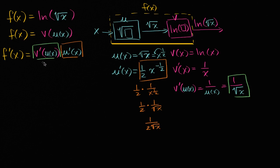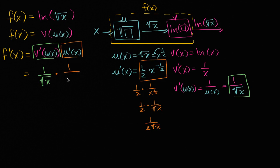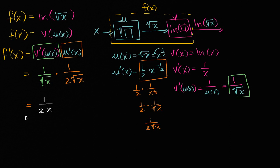So what is f'(x) going to be equal to? It's going to be v'(u(x)) · u'(x) = (1/√x) · (1/(2√x)). This is just algebra at this point: we have a 2 in the denominator, and √x · √x = x. So it simplifies to 1/(2x).